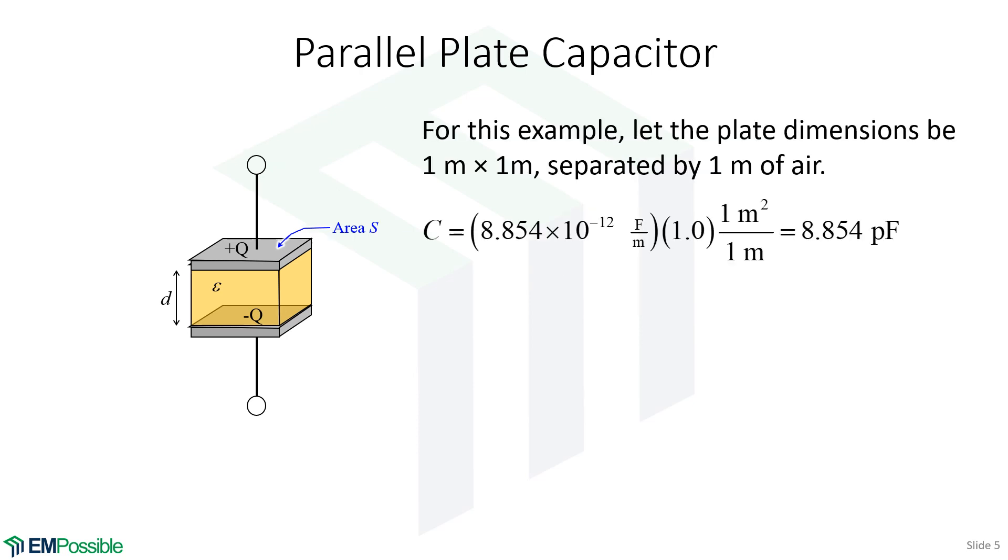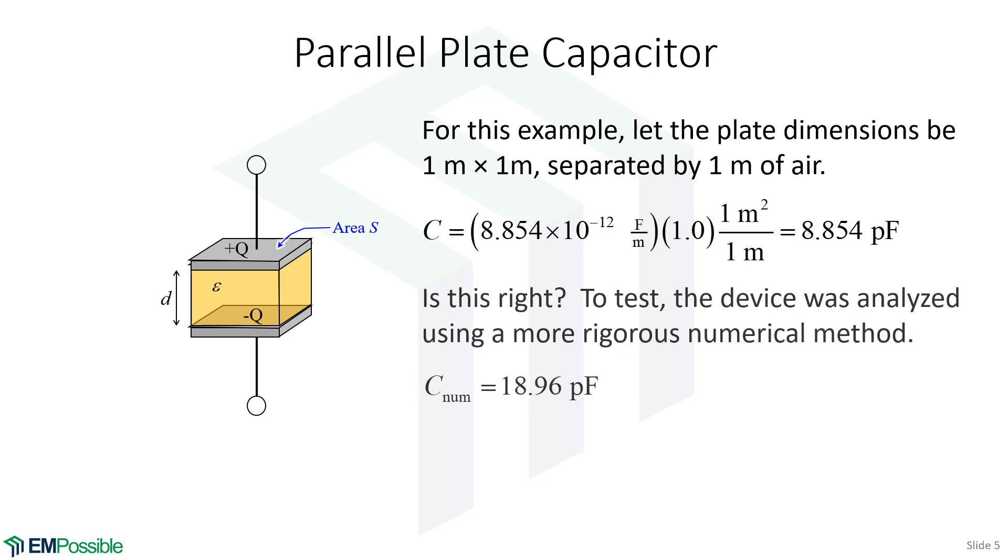For easy numbers, let's say these plates are 1 meter by 1 meter and separated by 1 meter of air. It turns out the capacitance is around 8.9 picofarads. Well, spoiler alert, if we were to do this numerically, we calculate close to 19 picofarads. So we're off by a factor of 2. Why the big difference between these two?